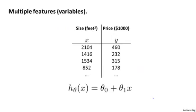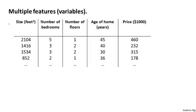Here's what I mean. In the original version of linear regression that we developed, we had a single feature x, the size of the house, and we wanted to use that to predict y, the price of the house. But now imagine what if we had not only the size of the house as a feature, but that we also knew the number of bedrooms, the number of floors, and the age of the home in years. It seems like this would give us a lot more information with which to predict the price.